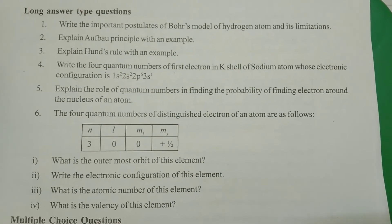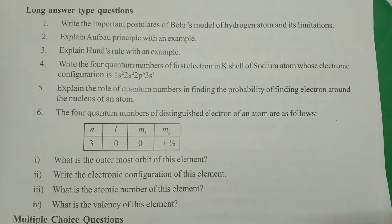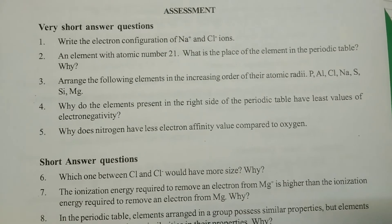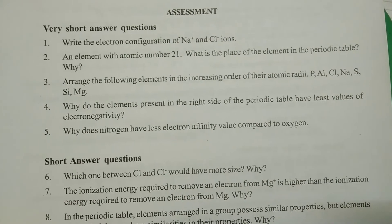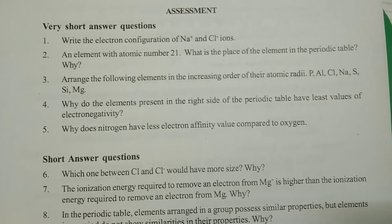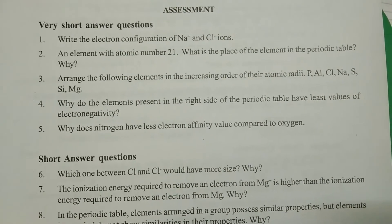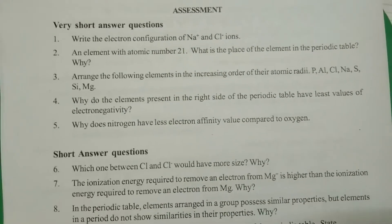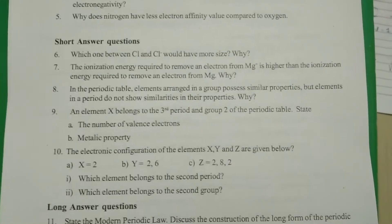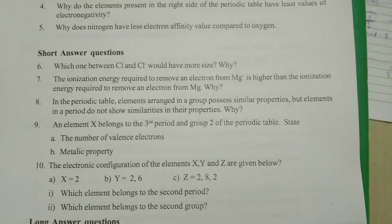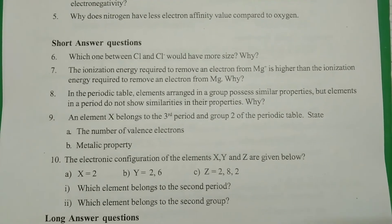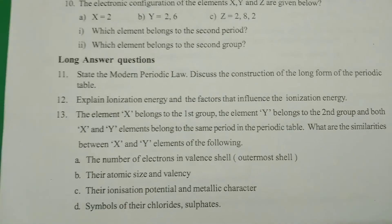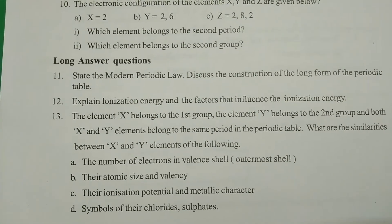Topics like Bohr's model, Aufbau principle, and Hund's rule — among these three they may ask any one question. From chapter number seven, Classification of Elements and the Modern Periodic Table, there are five very short answer questions, five short answer questions, and three long answer questions.